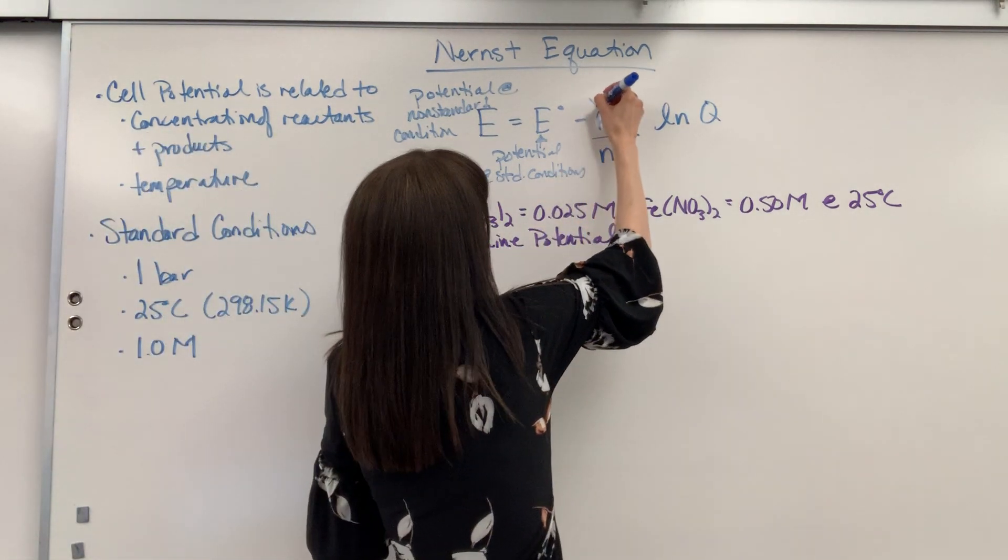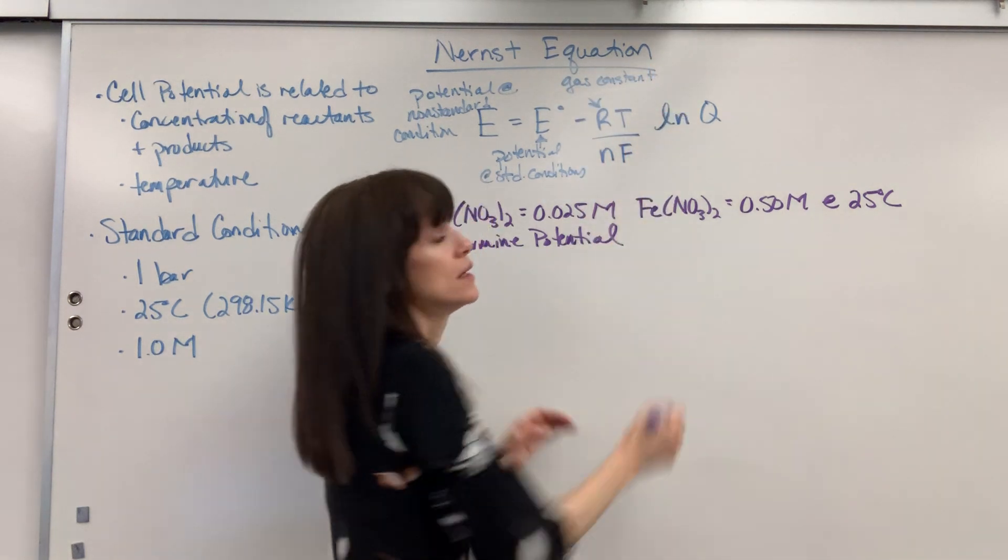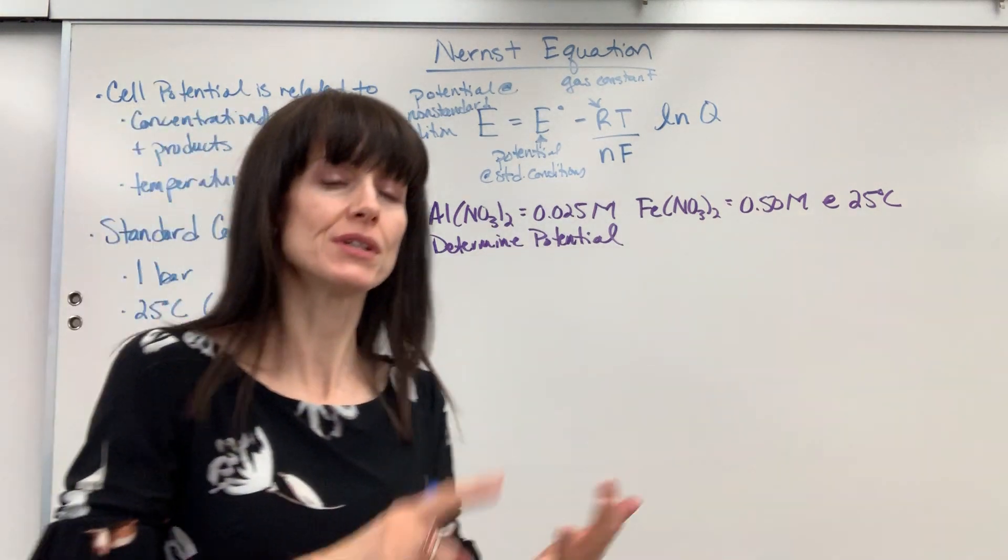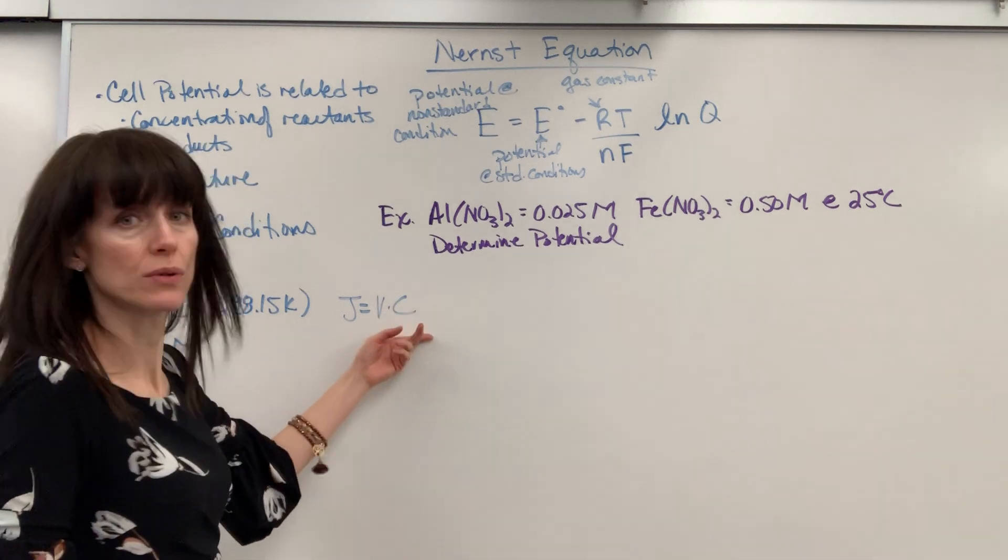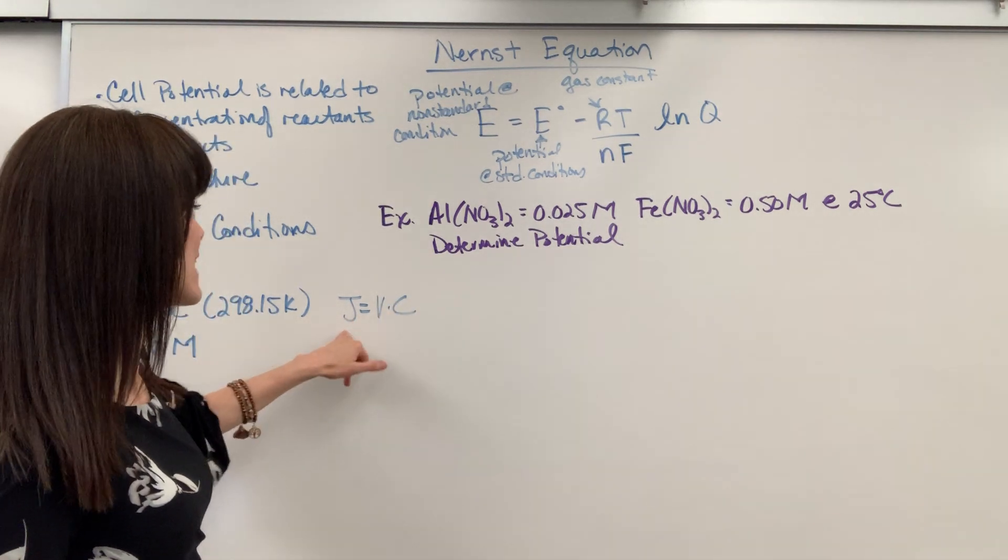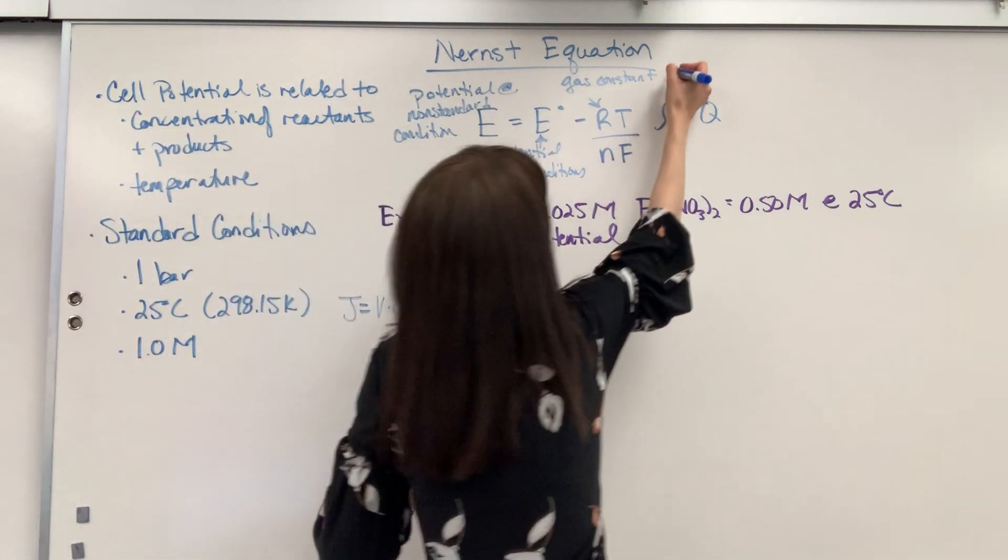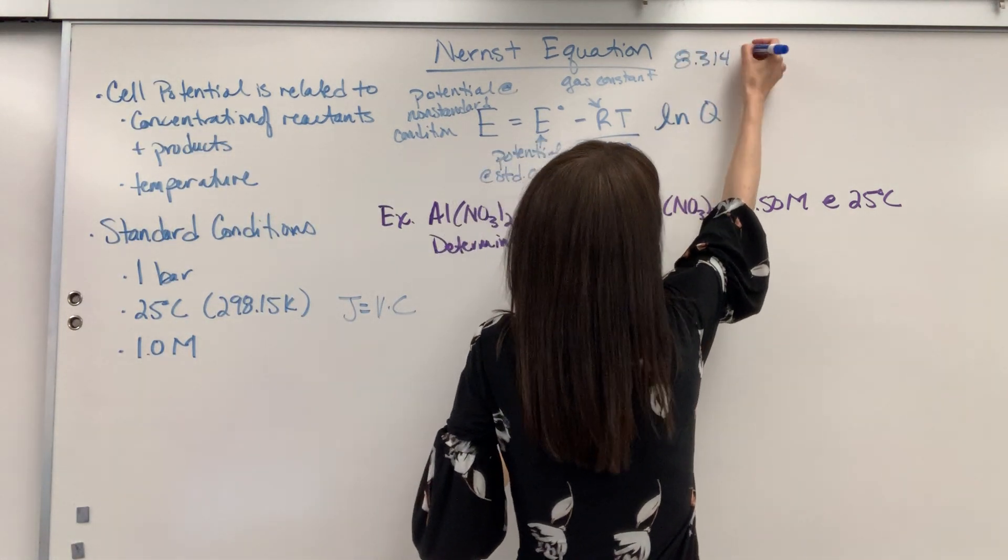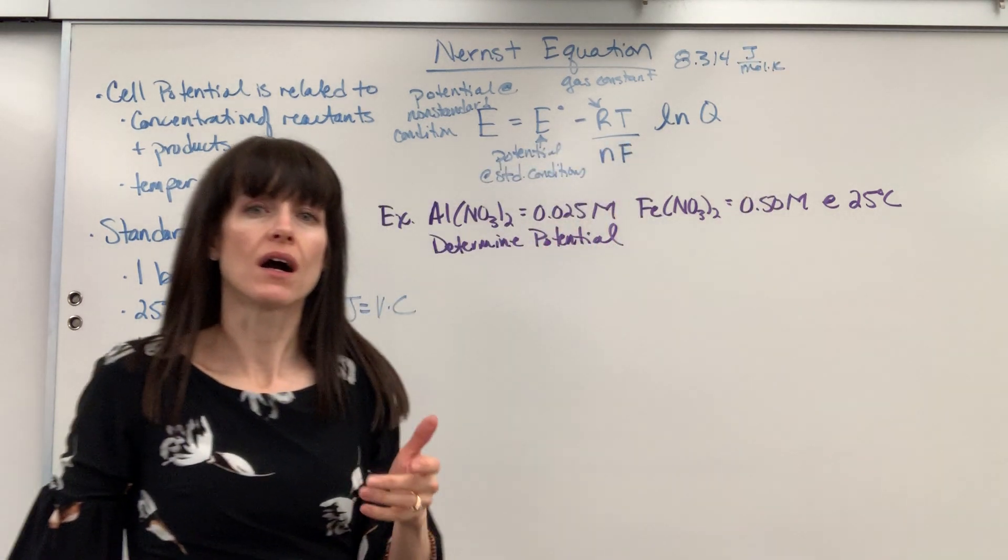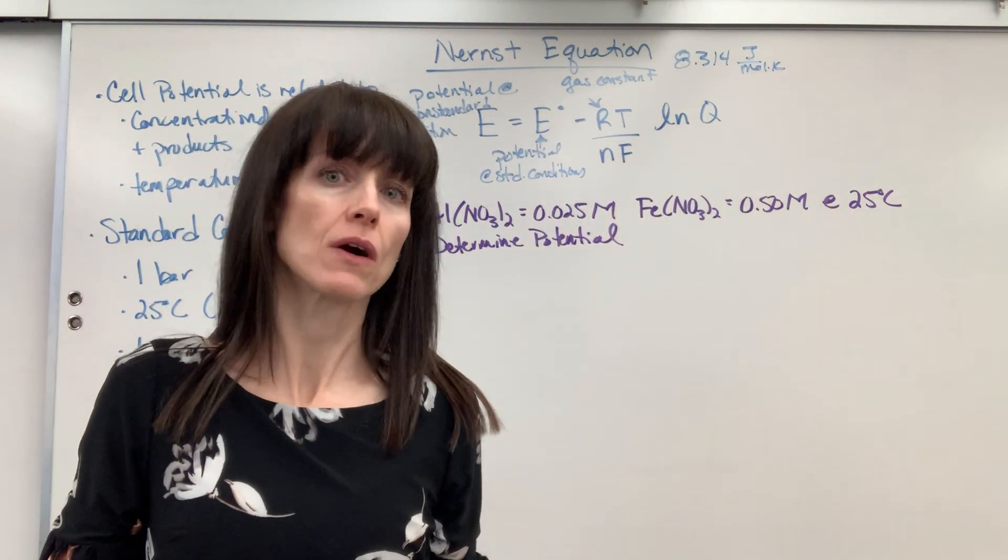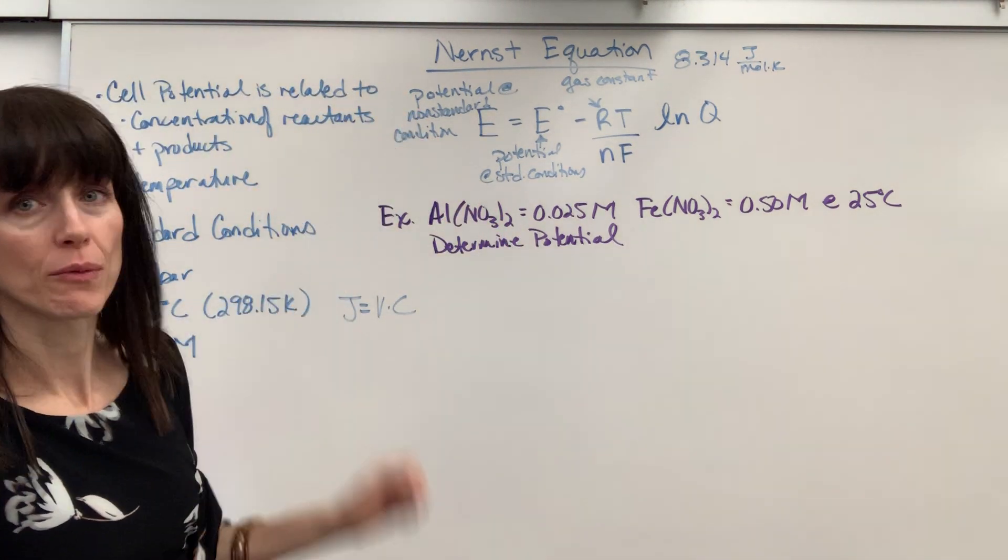R, this is going to be our gas constant. Now be careful on this. We are dealing with voltage, and remember, voltage is related to energy. A reminder, joules equals a volt times a Coulomb. So potential is volts, energy is joules. So you have to use the 8.314 joules divided by mole times Kelvin. Whenever you see R, you're thinking, am I dealing with pressure or am I dealing with energy? Definitely dealing with energy. So you have to use the 8.314.